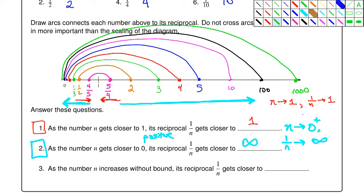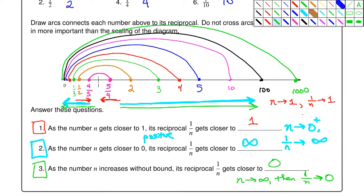And the last one, number three: as n increases without bound, going toward infinity, the reciprocal 1/n goes toward zero. As n goes to infinity, 1/n approaches zero — you could even say it approaches from the positive side. So as n gets closer to zero, the reciprocal grows without bound to infinity, or if it's getting closer to zero on the negative side, it goes to negative infinity. And as n increases without bound, the reciprocal gets closer to zero — they're related in an inverse fashion.